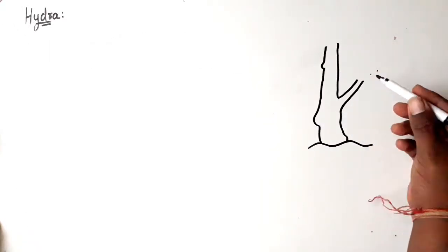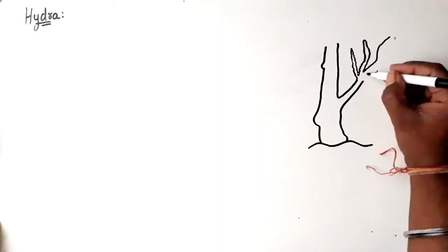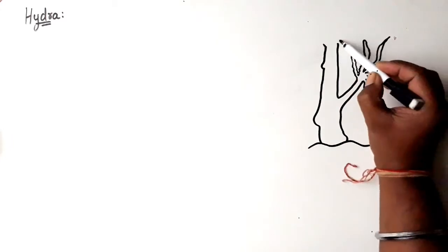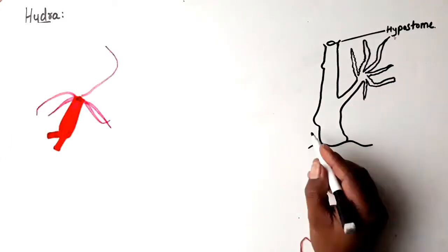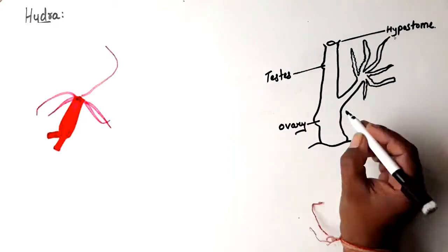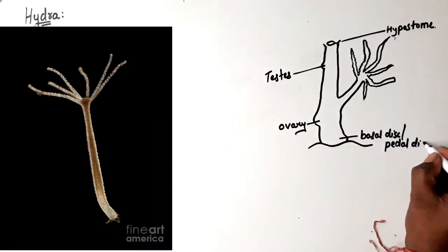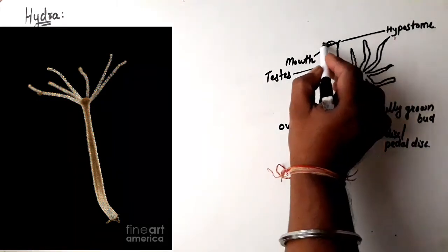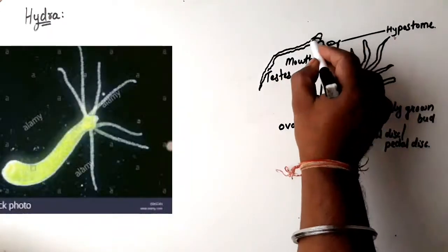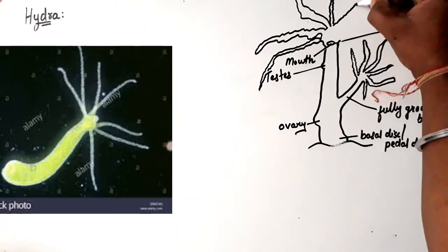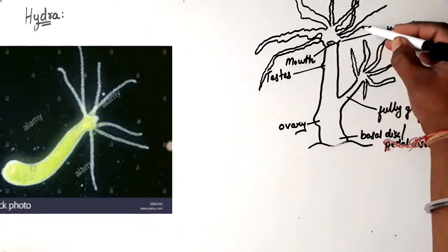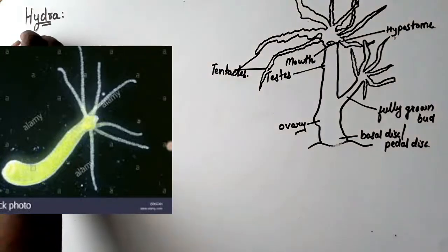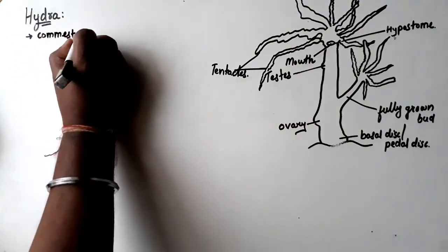Hydra is represented by different species found worldwide. Most common is Hydra vulgaris, which is orange-red in color. Then comes Hydra fasca, also called palmetohydra, which is brown in color. Hydra viridis, also called chlorohydra viridissima, is green due to the presence of symbiotic green algae called zoochlorella in the endodermal cells.